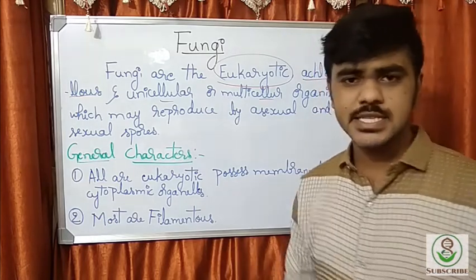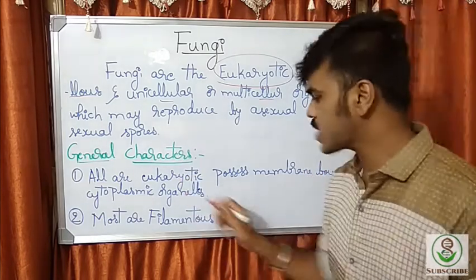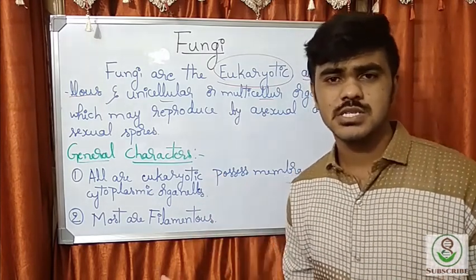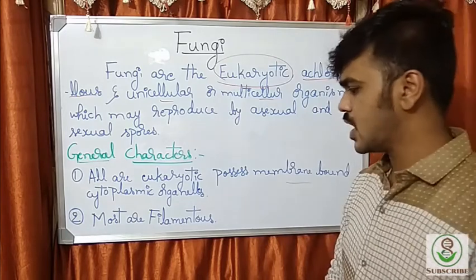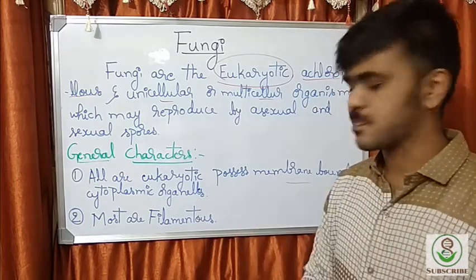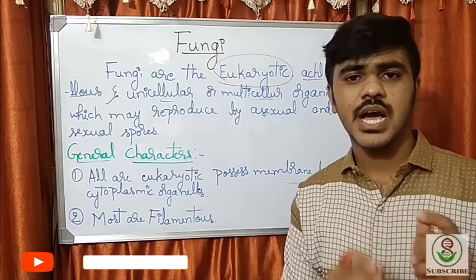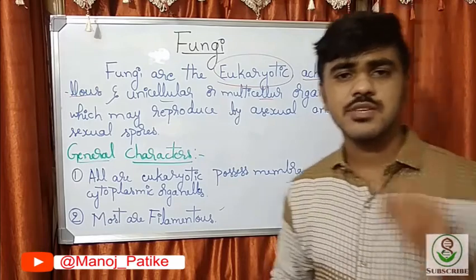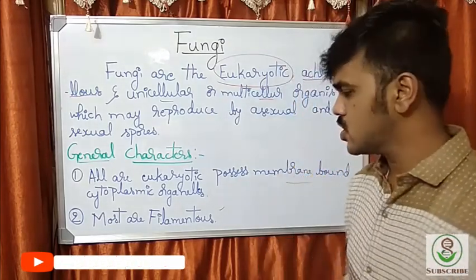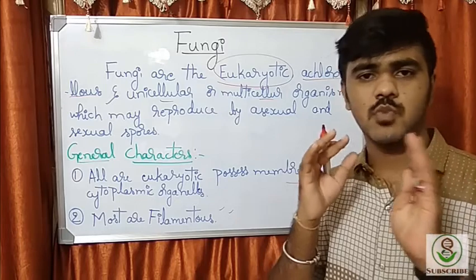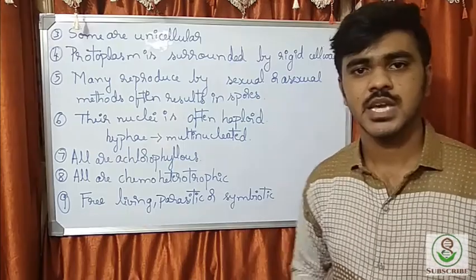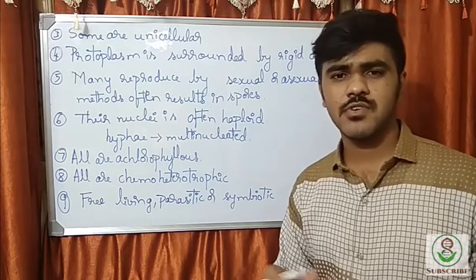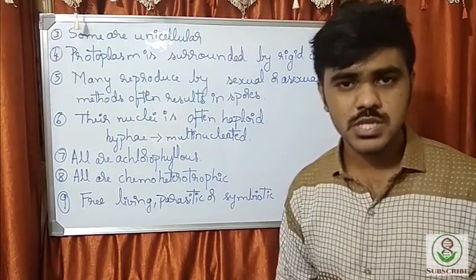Now let's see the general characters. All fungi are eukaryotic and possess membrane-bound cytoplasmic organelles such as nucleus, Golgi complex, etc. Most are filamentous — the filaments are called hyphae, which I will discuss further in later classes. Most fungi contain hyphae and are filamentous, or sometimes unicellular like yeast. Most are multicellular, but yeast is a unicellular fungus.